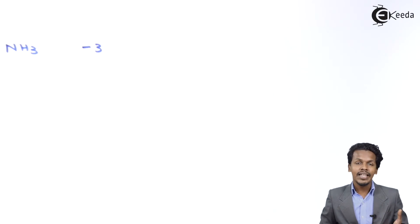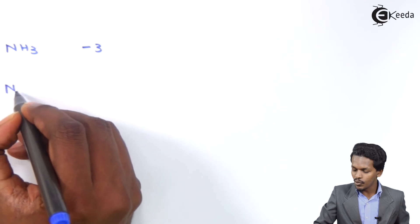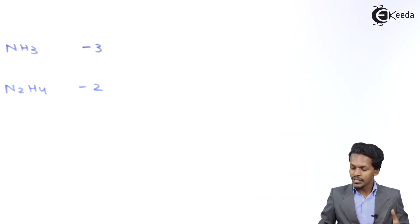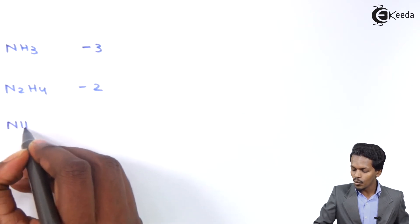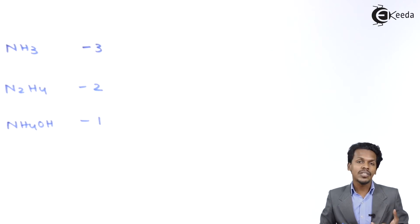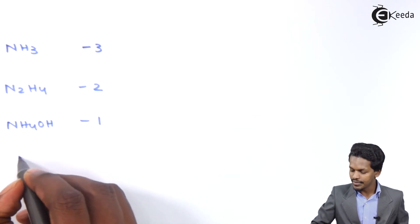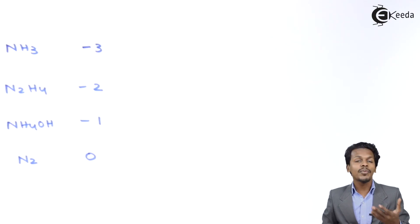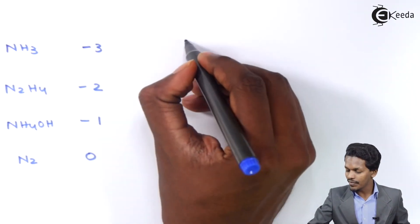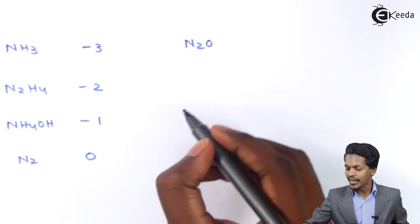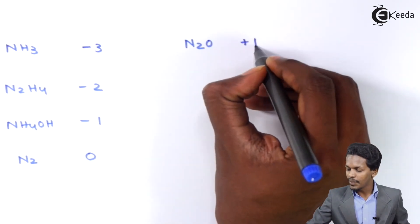In hydroxylamine (NH₂OH), the oxidation state of nitrogen is minus 1. In elemental nitrogen (N₂), the oxidation state is 0. In the oxide of nitrogen N₂O, the oxidation state of nitrogen is plus 1.